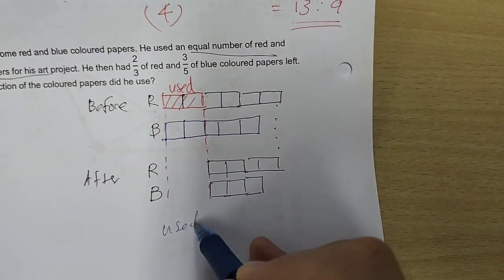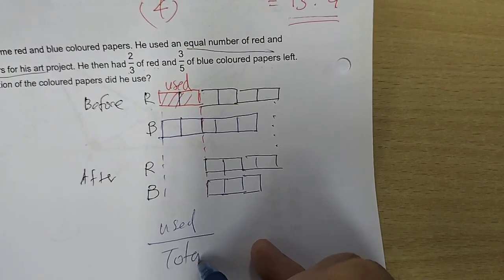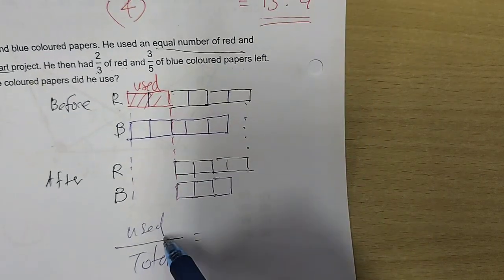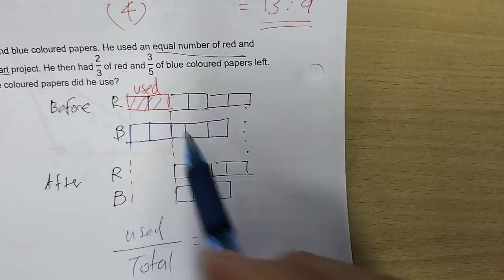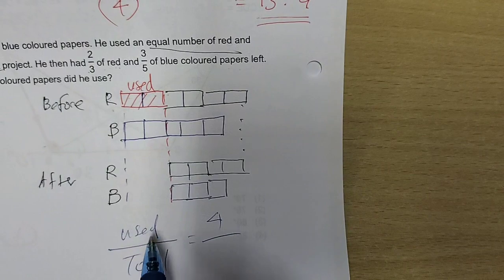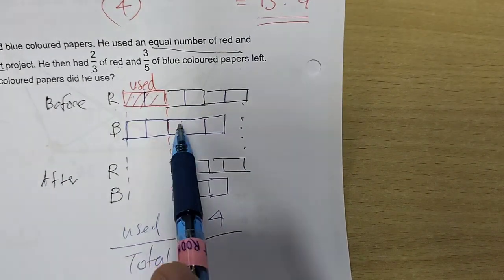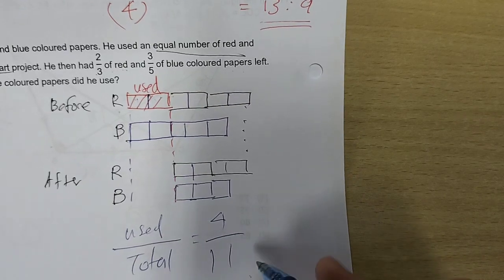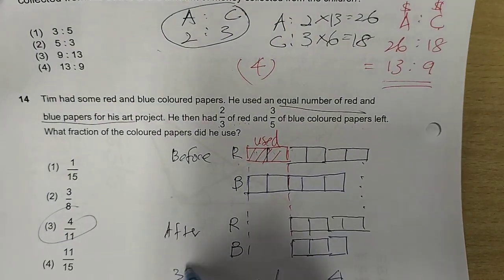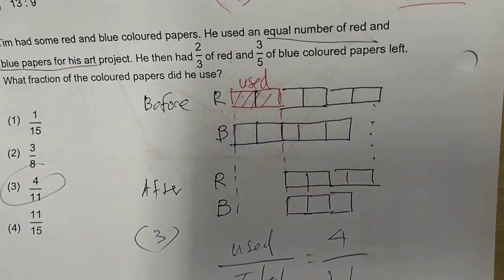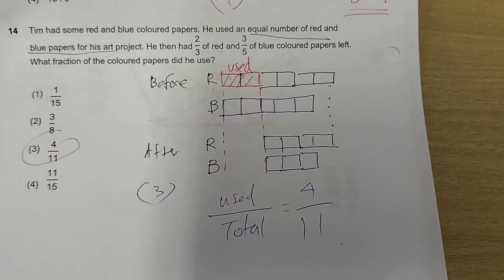What fraction of coloured papers did he use? So, a fraction now will be used over total. How many parts were used? One, two, three, four. What's the total number at first? One, two, three, four, five, six, seven, eight, nine, ten, eleven. And this is the answer. Number three. The main part is how to draw the model to solve this question.